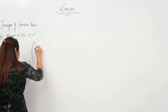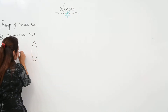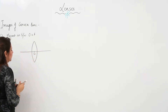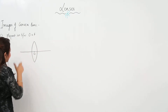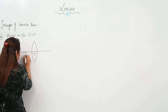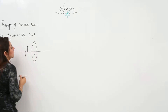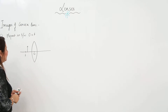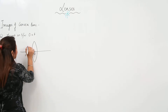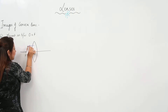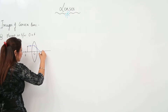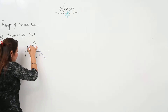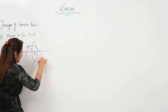Let's draw the figure. This is the lens and this is the optical center. The object is between O and F. We will be considering two rules. The first is the ray coming parallel to the principal axis — after refraction, it passes through the focus. The second rule is that the ray passing through O goes straight.